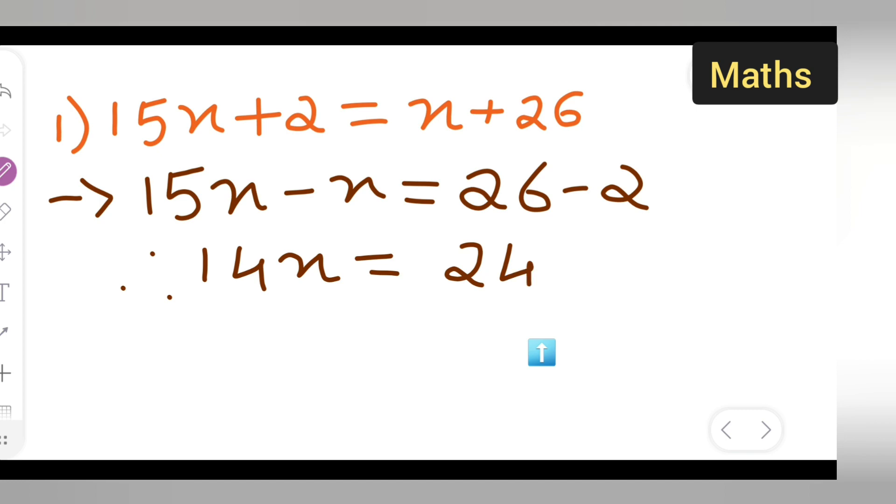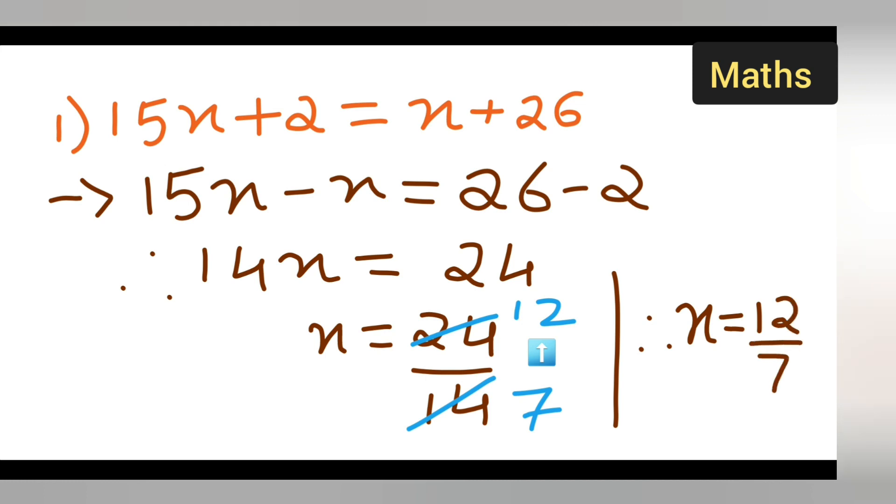So we'll get 24. Write down x is equal to 24 upon 14. What you're going to get is: cancel this, two sevens, so two ones are two, twos are... So what will be your answer? Therefore x is equal to 12 upon 7.